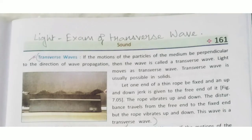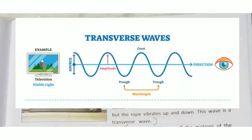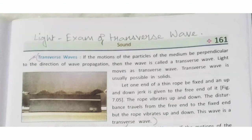Transverse waves: if the motions of the particles of the medium are perpendicular to the direction of wave propagation, the wave is called a transverse wave. Light moves as a transverse wave. Transverse waves are usually possible in solids. For example, if one end of a thin rope is fixed and an up-and-down jerk is given to the free end, the rope vibrates up and down while the disturbance travels from the free end to the fixed end — this is a transverse wave.